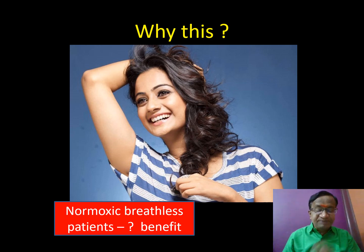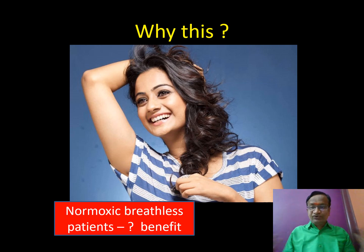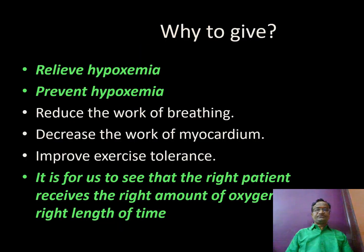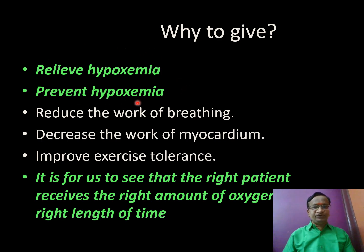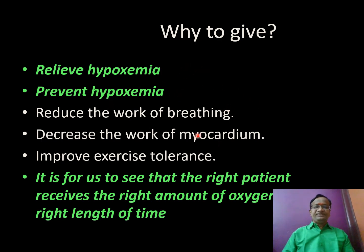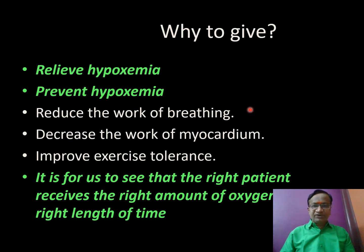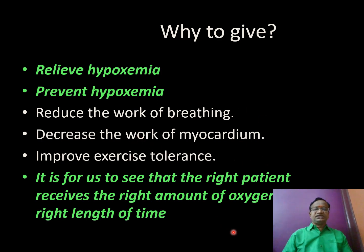A normal sick breathless patient may not benefit 100% from oxygen, but we give it to relieve hypoxemia and prevent hypoxia. It also helps reduce the work of breathing — for example, a patient breathing at 30 per minute may come down to 24-25 after starting oxygen. It improves exercise tolerance. The right patient should receive the right amount of oxygen for the right length of time.